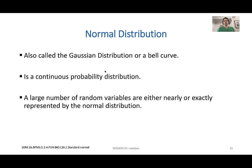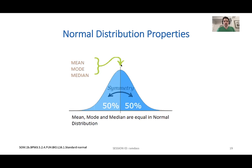In a normal distribution — this bell curve — if it's a proper bell curve, everything will equal each other: the mean should equal the median should equal the mode. That's a fair question they could ask you.